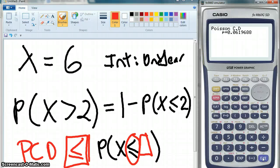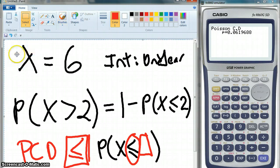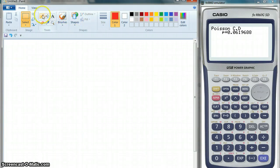Question number three. This is where it gets interesting. So, what we've got is lambda equals six per year.